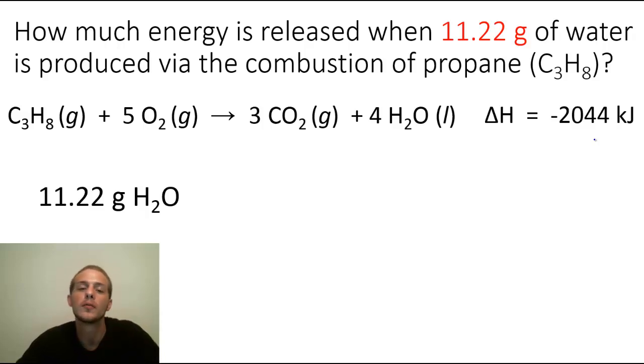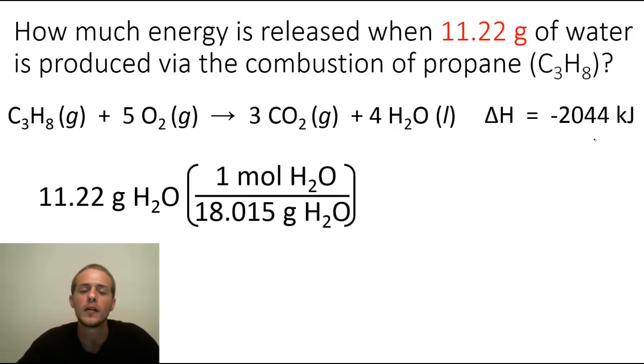And what we need to do is we need to convert that into moles because, again, the mole is the unit that is compatible with the balanced chemical equation. It doesn't say anything about mass. It's talking about moles. And so we can easily do this by using the molar mass of water, which is 18.015 grams per mole. The mass of water is on the bottom. The amount of moles, the amount of water in moles is going to be on the top. And again, that number has been obtained from the periodic table by adding together the molar masses of two hydrogens and one oxygen.